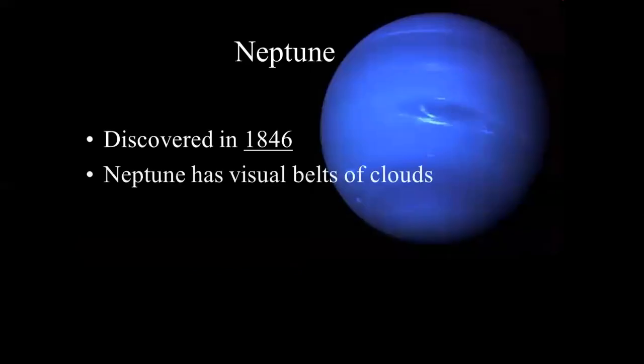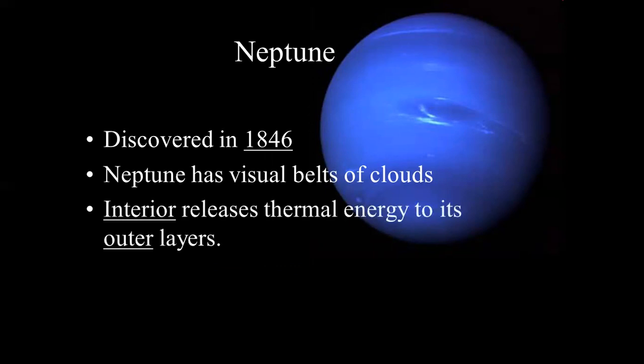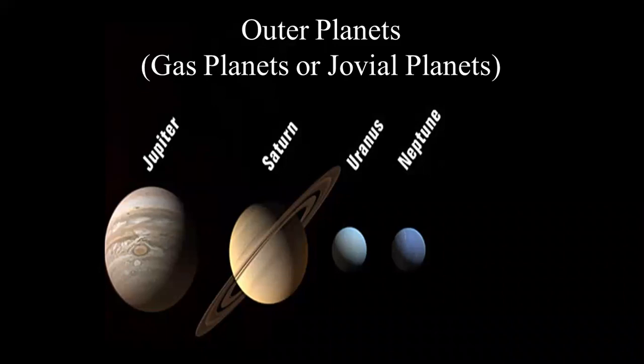The last planet is Neptune. Neptune was discovered in 1846. Neptune has visible bands of clouds. Its interior releases thermal energy to its outer layers. Pluto was part of the planetary system until 1999. It was revealed that the sun had nine revolving planets, but then Pluto was so distant that it was not included in the planetary system. So the last planet we have is Neptune. The four outer planets have common properties: they have multiple moon systems, they have ring systems as well, they don't have solid surfaces, and they are very huge.